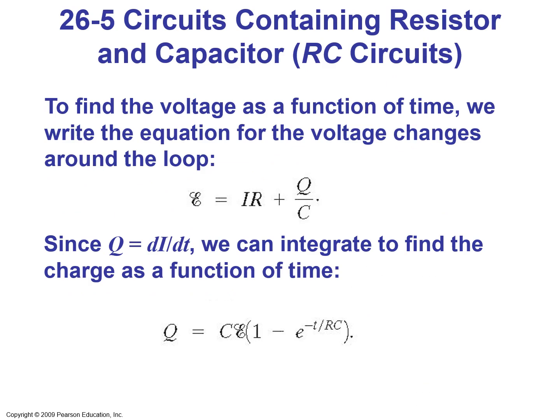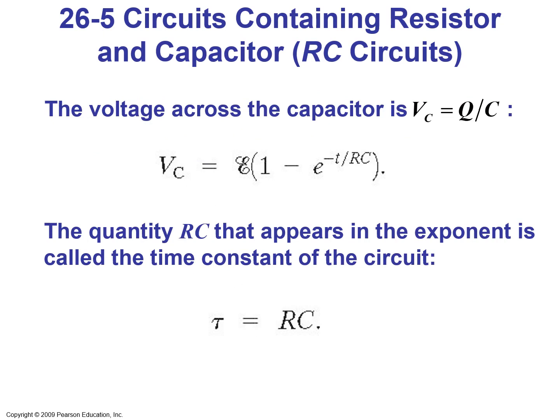To find voltage as a function of time, we write EMF equals IR plus Q over C. Since I equals DQ over DT, integrating gives charge Q equals C times E times (1 minus e to the power of minus T over RC). The quantity RC in the exponent is called the time constant of the circuit, defined as tau equals RC.